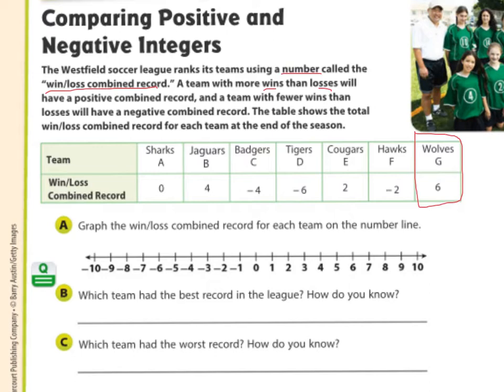That means the Wolves had 6 more wins than they did losses. The Hawks' win-loss combined record is negative 2, meaning they had more losses than wins — 2 more losses than wins. So if they won 10 games, they lost 12. The Cougars won 2 more games than they lost, and the Tigers lost 6 more games than they won.